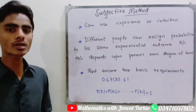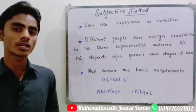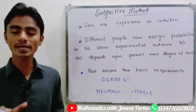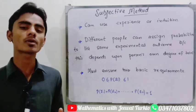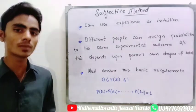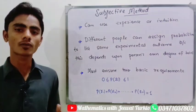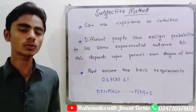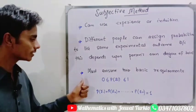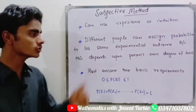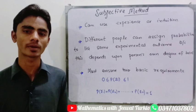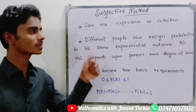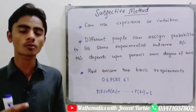With the subjective method, different people can assign different probabilities to the same experiment, because it all depends upon one's own belief, one's own experience, and one's own intuition. However, one must still ensure the two basic requirements: the assigned probability for each experimental outcome must be from 0 to 1, and the sum of all probabilities must equal one.